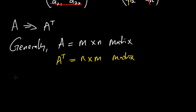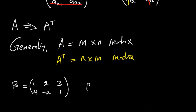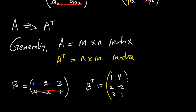For example, if matrix B is a 2 by 3 matrix, I'm expecting B transpose to be a 3 by 2 matrix. Interchanging rows and columns, the first row becomes the first column: 1, 2, 3. The second row becomes the second column: 4, negative 2, 1. So that is a quick overview of what the transpose of a matrix looks like.